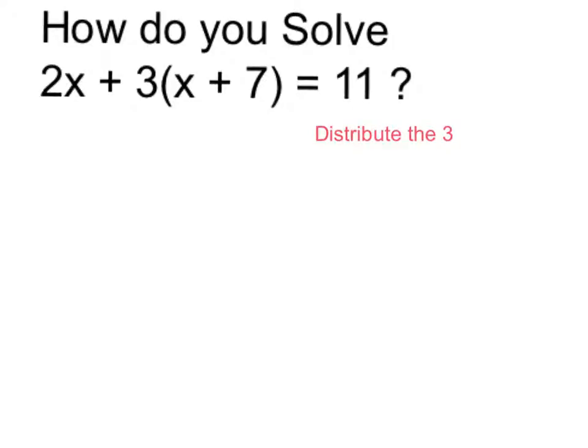To this end, a nice first step is to distribute the 3 to the x and the 7. The distributive property tells us that if we have it outside the parentheses, it can get multiplied by both things inside the parentheses. 3 times 7 is 21. I now have 2x plus 3x plus 21 equals 11.